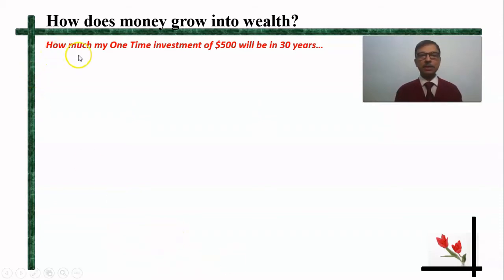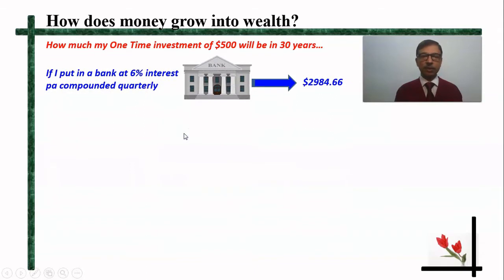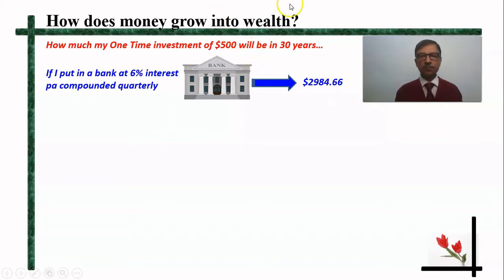Suppose that person makes a one-time investment of $500 for a period of 30 years. He goes to the bank and puts the money in at 6% interest compounded quarterly. At the end of 30 years, what he will get is $2,984 — almost $3,000. Not a very significant amount, because it will just be adequate to beat inflation.